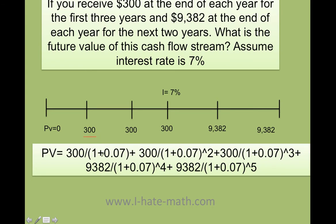300 over one plus 0.07, which is the interest rate. And this is to the one plus 300 over the same thing squared and so on. Let's do this actually in the calculator and let's see how this is going to be.